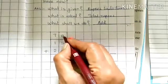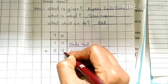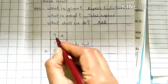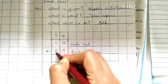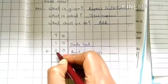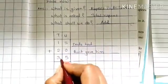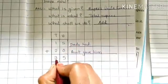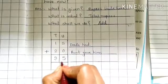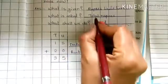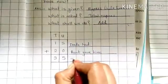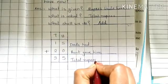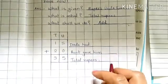Now we have to add this. Unit place, 5 plus 0. What children, 5 plus 0? Yes, it is 5. Then tens column, 1 plus 2, 1 plus 2 is 3. So 3 tens, 5 unit. So what is this 35, children? These 35 are total rupees. So this is our final answer.